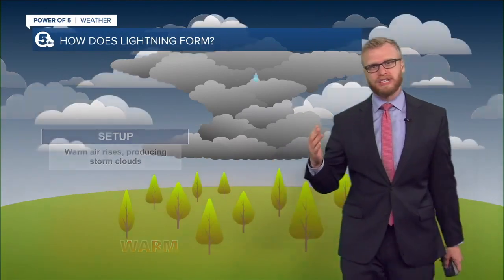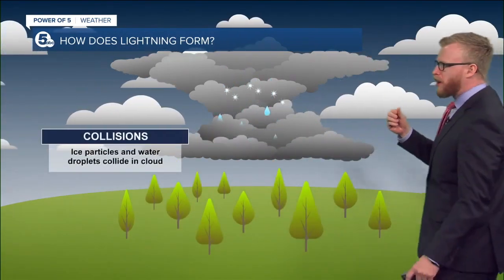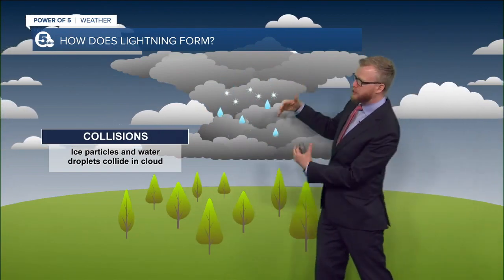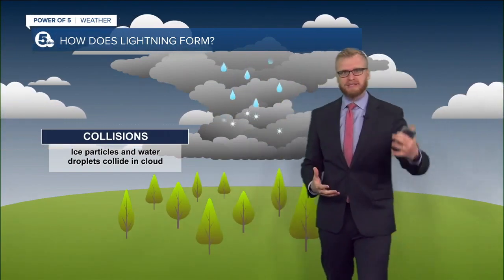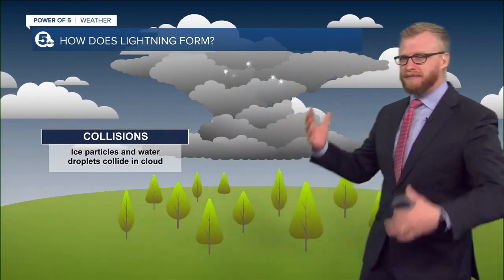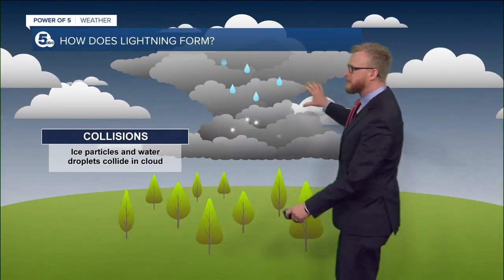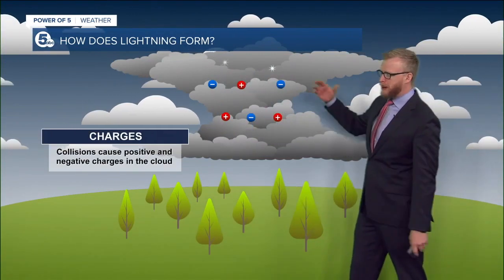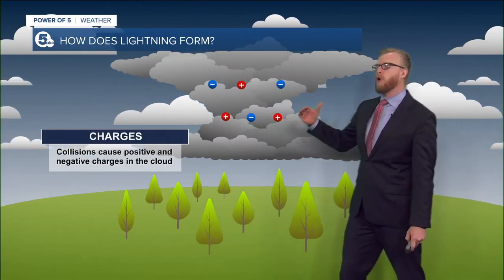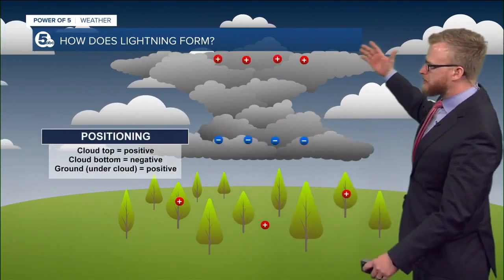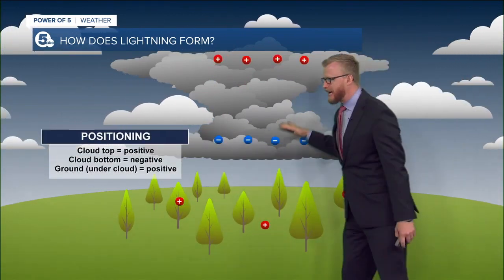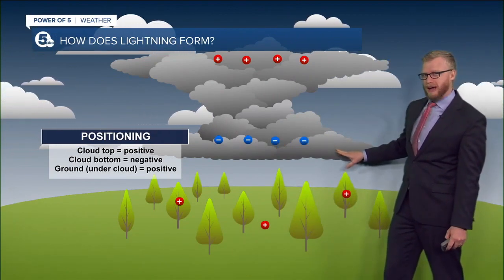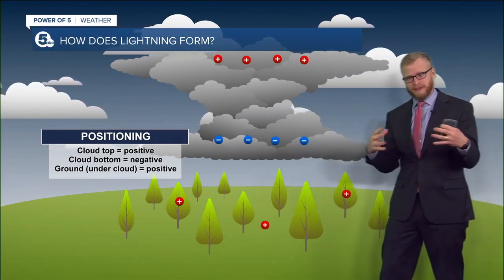The higher you get, the colder it is. So all those water droplets and water vapor rise up into the clouds, and they're freezing. That collision between water droplets falling and ice pellets rising — up and down, left and right, all around — all those collisions create this separation of charges, positives and negatives. Over time, you'll get those positives setting up on the tops of the clouds and the negatives setting up on the bottoms of the clouds. Opposites attract, like trying to hold magnets apart — they want to get together.